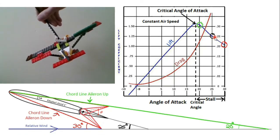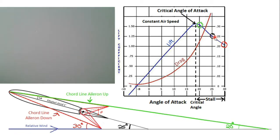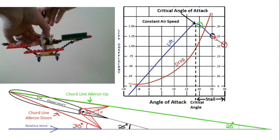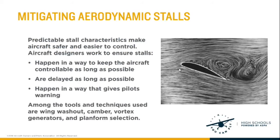When the pilot rolls right on the controls, the airplane actually rolls left — that's a very dangerous situation because you never want the airplane to do the opposite of what the pilot is commanding. The learning target for the next lesson is to understand how aircraft designers fix this problem with the ailerons. The goal is to keep the ailerons working correctly during an initial stall, using methods such as wing washout, camber, vortex generators, and planform selection.